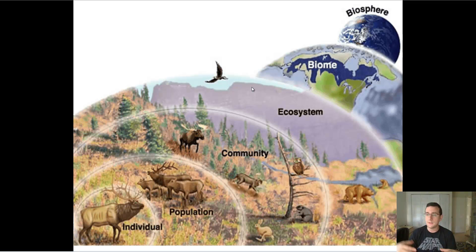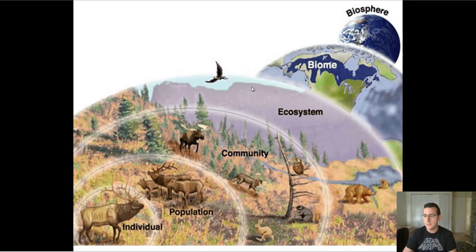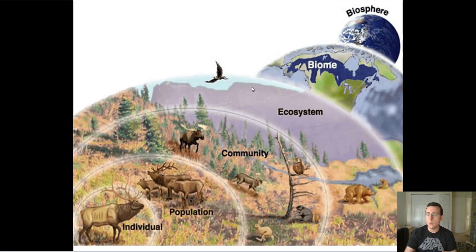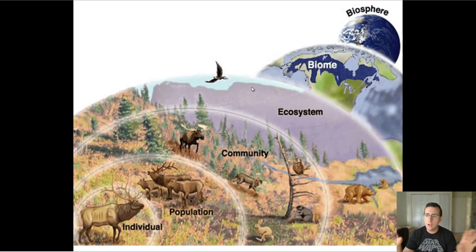Community ecology covers topics like symbiosis, predation, and competition. We also study how energy travels from animal to animal through food pyramids and food webs — all part of community ecology. We also learn about populations: population growth, and what factors cause a population to increase or decrease. All of these parts represent the different fields of ecology.